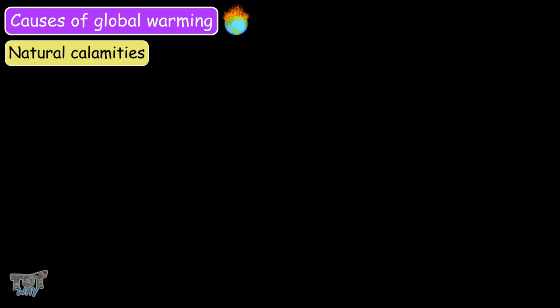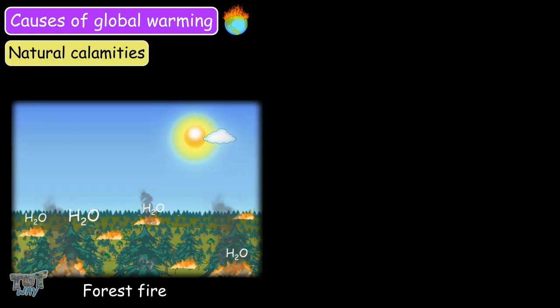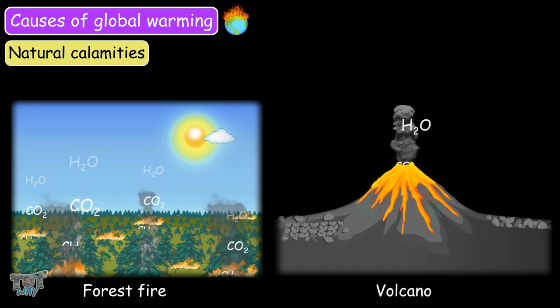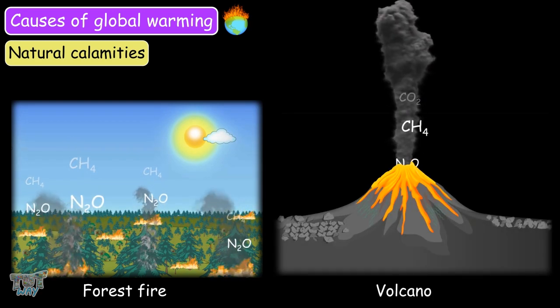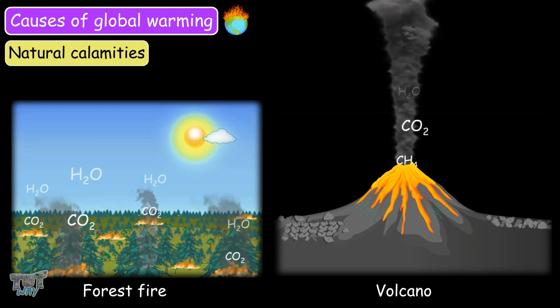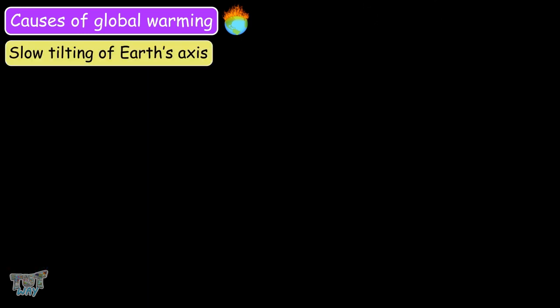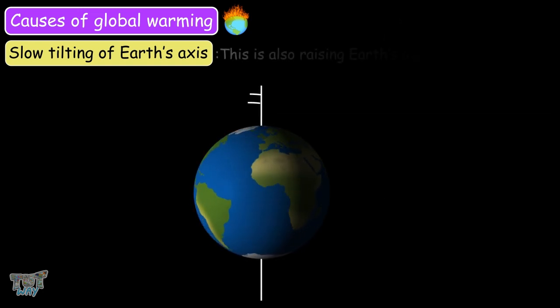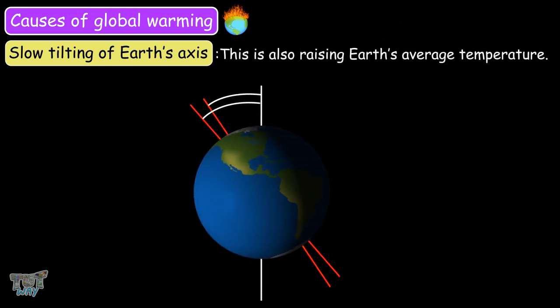Natural calamities. Forest fires and volcanoes release large amounts of greenhouse gases into the atmosphere, so that's also leading to global warming. Some studies show that the slow tilting of the Earth's axis is also raising our Earth's average temperature.